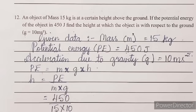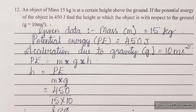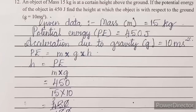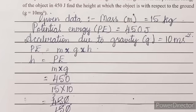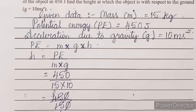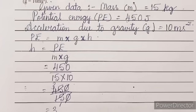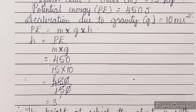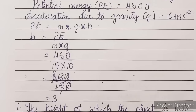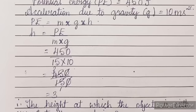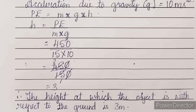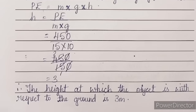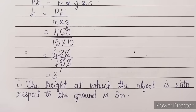Next question: an object of mass 15 kg is at a certain height above the ground. If the potential energy of the object is 450 J, find the height at which the object is with respect to the ground. g = 10 m/s². I have solved the answer with the formulas — you can refer from here.